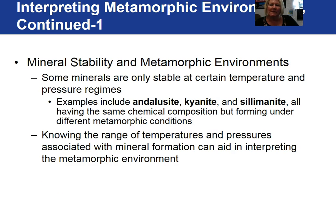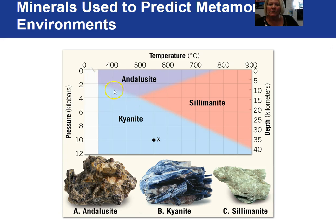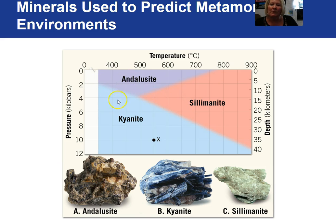Some minerals are only stable at certain pressure and temperature regimes and are excellent index minerals. Examples are andalusite, kyanite, and sillimanite. Knowing the pressures and temperatures at which these three minerals are stable helps interpret the metamorphic environment. Andalusite is a low pressure mineral. Sillimanite indicates high temperature and high pressure. Kyanite indicates moderate temperature but definitely high pressure. If you have a metamorphic environment plotting at point X, you would expect to find kyanite. Along one boundary, sillimanite and kyanite are both stable; along another, andalusite and kyanite are both stable. The triple point is where all three minerals are stable simultaneously.